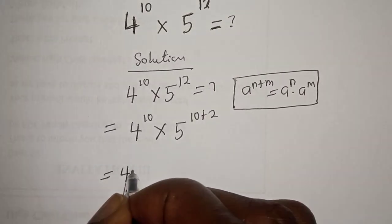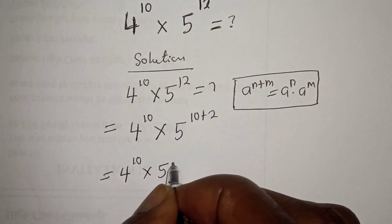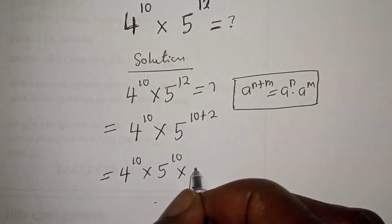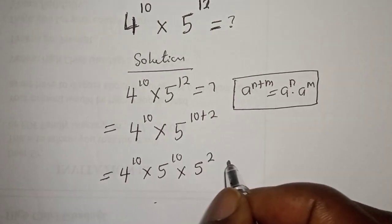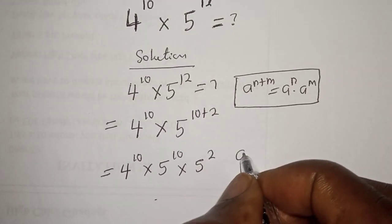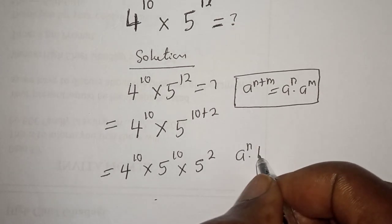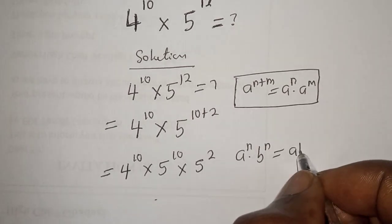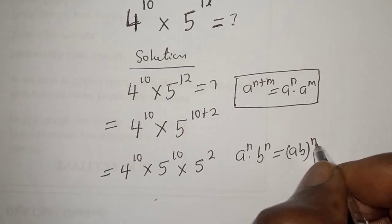So this equals 4 raised to power 10 multiplied by 5 raised to power 10 multiplied by 5 raised to power 2. Also, if you have a raised to power n multiplied by b raised to power n, this is equal to ab raised to power n.